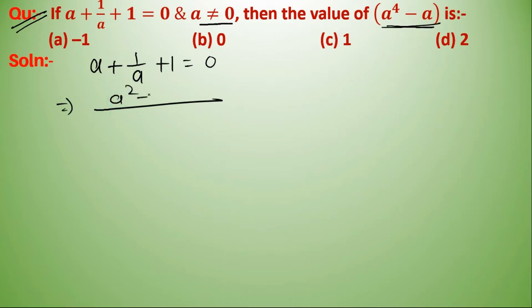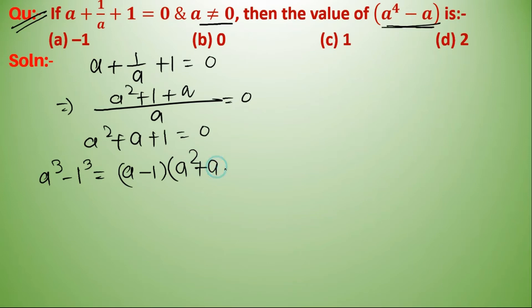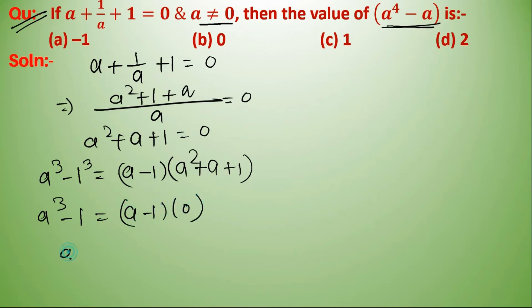So a squared plus a plus one equals zero. And a cubed minus one equals (a minus one) into (a squared plus a plus one), so a cubed minus one equals (a minus one) into zero.